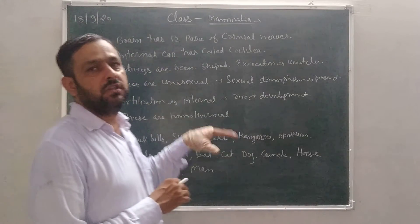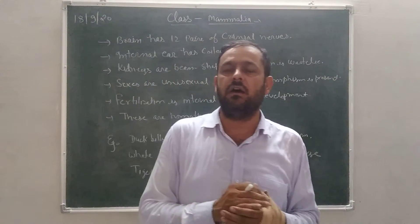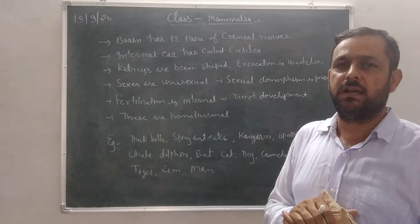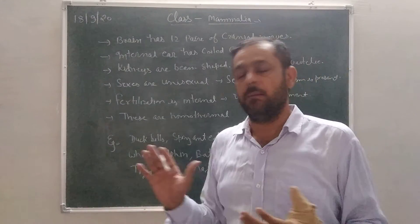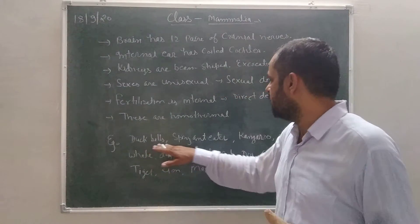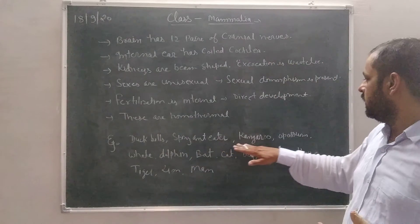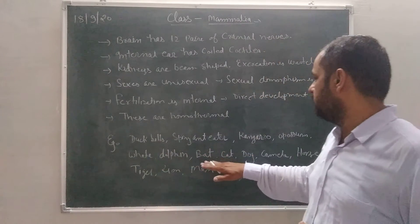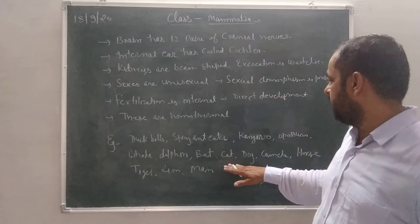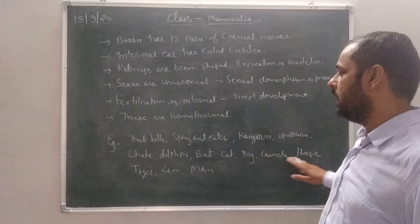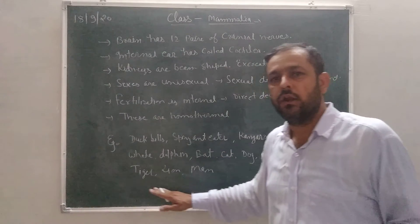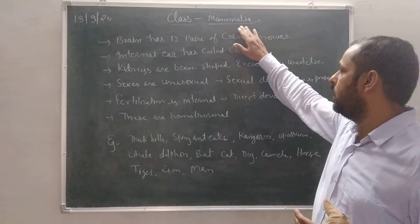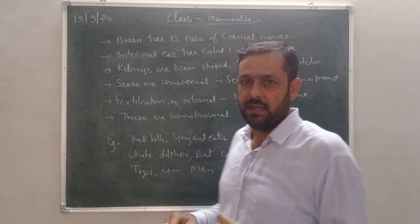These are homeothermal, meaning the body temperature remains constant. Examples of Mammalia include: duck-billed platypus, spiny anteater, kangaroo, opossum, whale, dolphin, bat, horse, dog, camel, horse, tiger, lion, and humans — man is also an example of Mammalia.